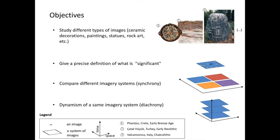My objectives are to study different kinds of images — whatever they are, on ceramics, paintings, rock art, or spatulas — and to give a precise definition of what is significant. In ancient iconography, exceptional images are often said to be significant, but by definition, exceptional means out of the distribution. So I define a system as a set of standard images, and I want to compare different imagery systems synchronically and study the evolution of an imagery system through time.